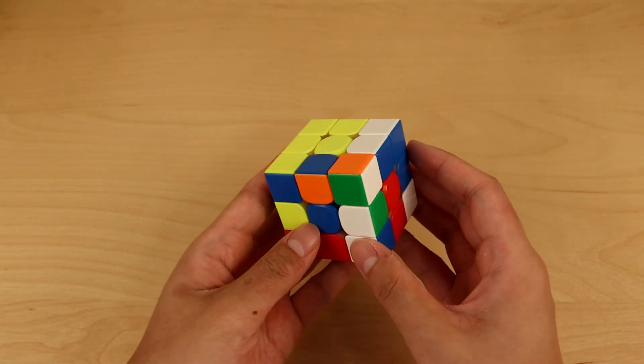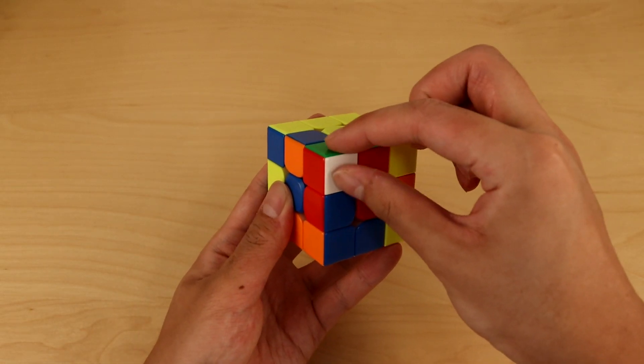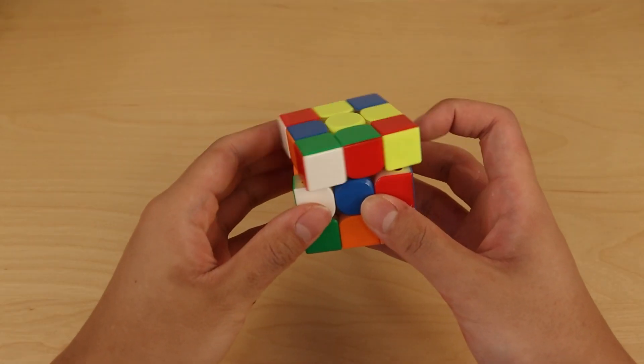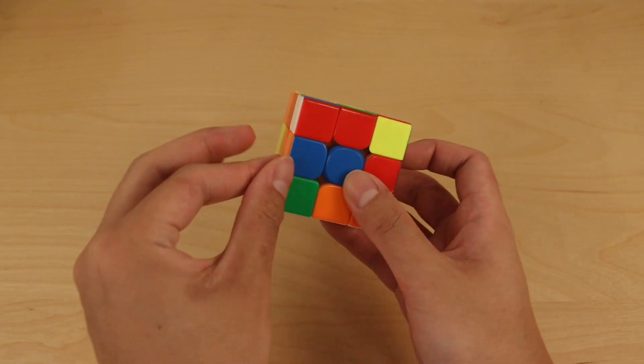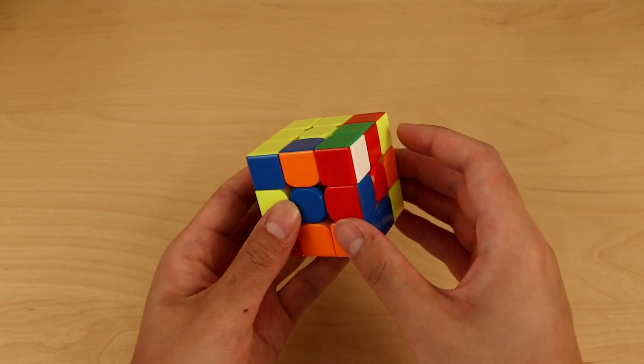But it gets even better. Notice when we do that, when we insert this edge piece, we also insert this corner by accident. So instead of just inserting this one edge which solves one piece, let's instead solve two pieces by placing this corner also in its right place.